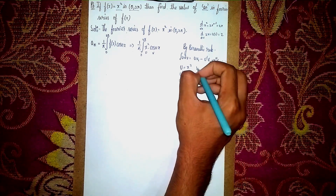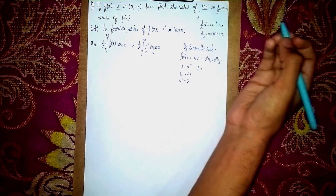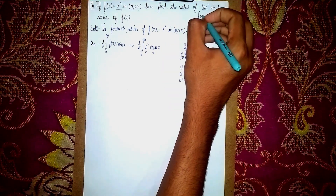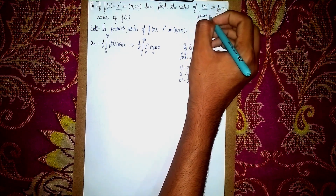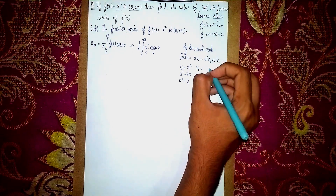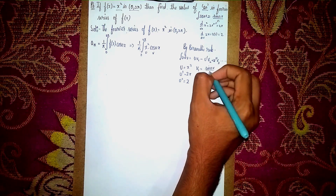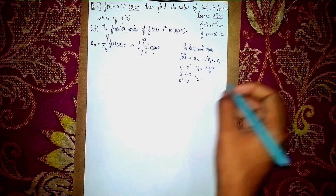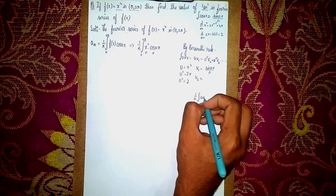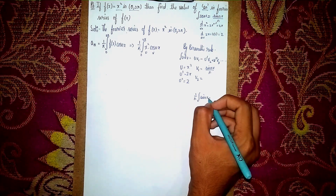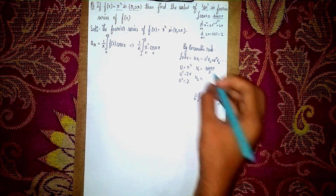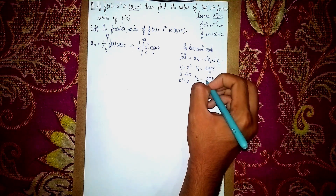For the v terms: remember u means differentiate and v means integrate. We integrate cos(nx): v₁ = sin(nx)/n. Then integrating sin(nx)/n: v₂ = (1/n)∫sin(nx) dx = −cos(nx)/n², so v₂ = −cos(nx)/n².